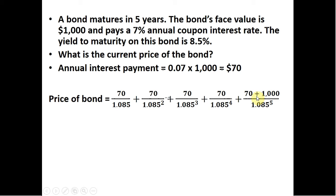Here at the end of the fifth year, not only does the bondholder get the $70 interest payment, the coupon interest payment, but the bondholder gets back the face value of $1,000. So here we have 1,070 divided by 1.085 raised to the fifth power.